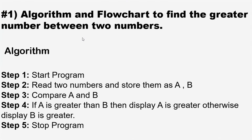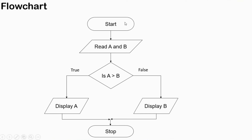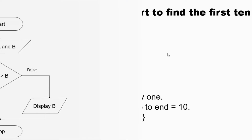Now let's look at its flowchart. First we start, then we read A and B. We can use different terms like 'accept' instead of 'read', or ask the user as well. In the third step we have a decision box saying 'is A greater than B?' If true, it will display A; otherwise if false, it will display B, and then it will stop the program.